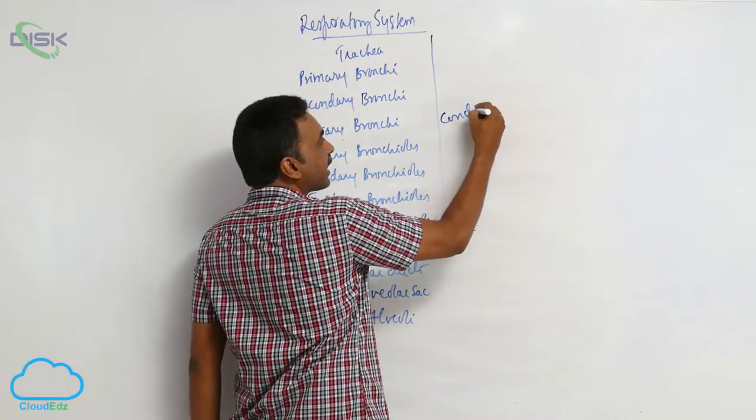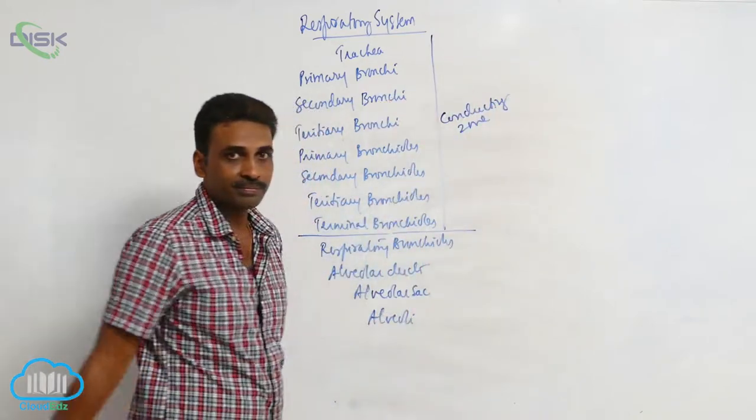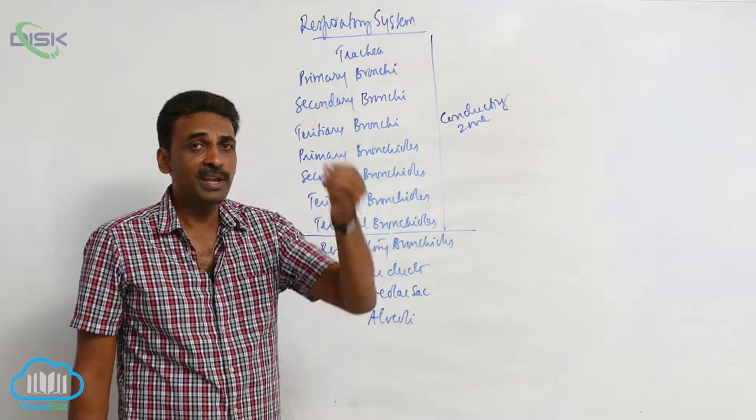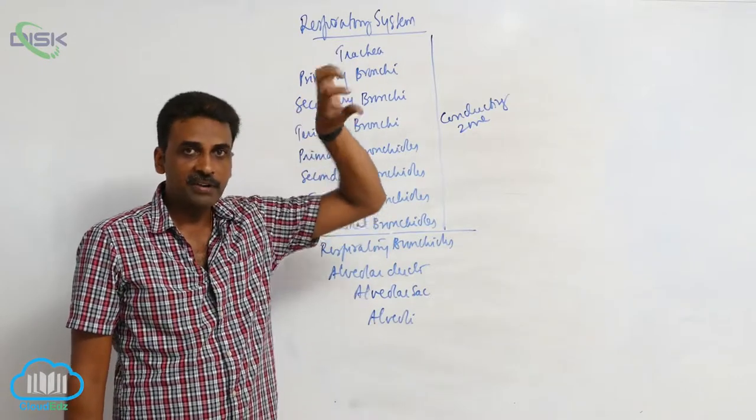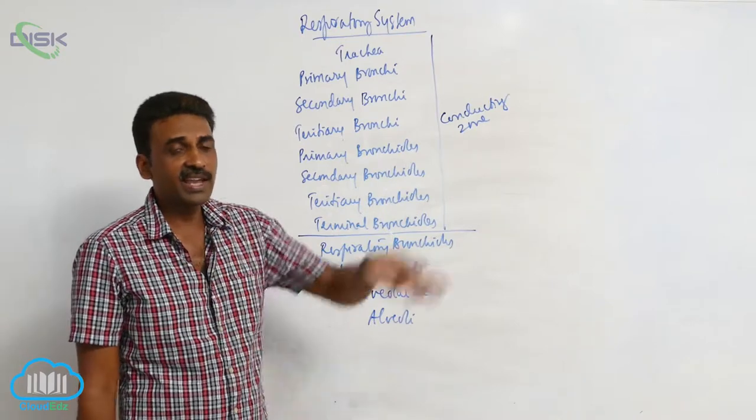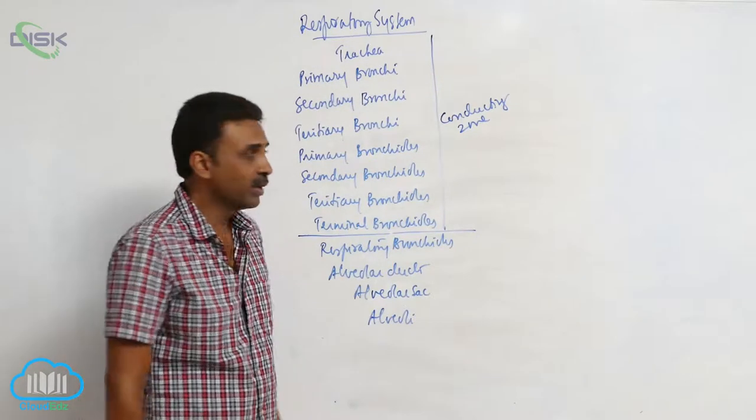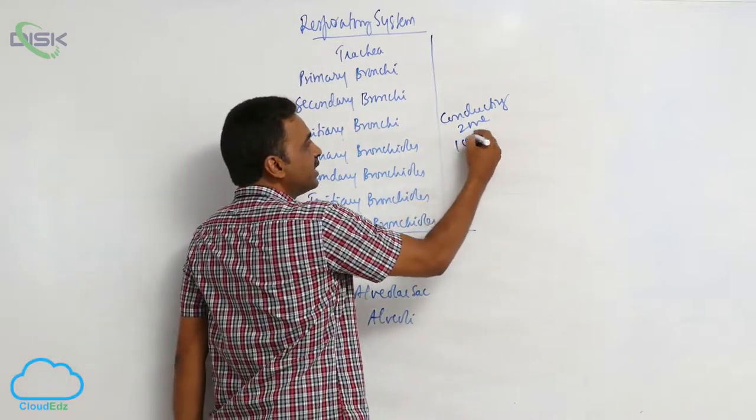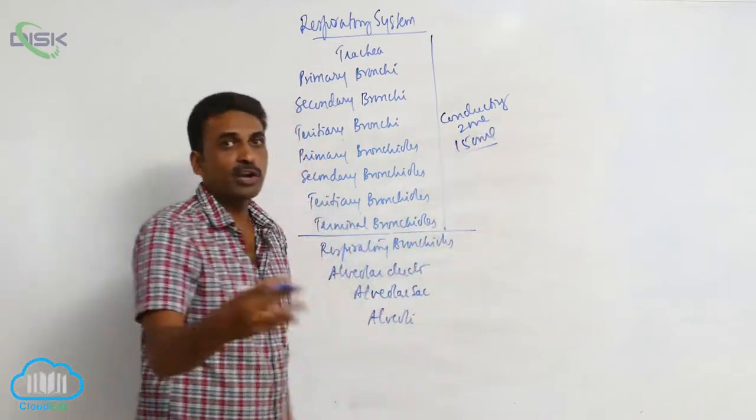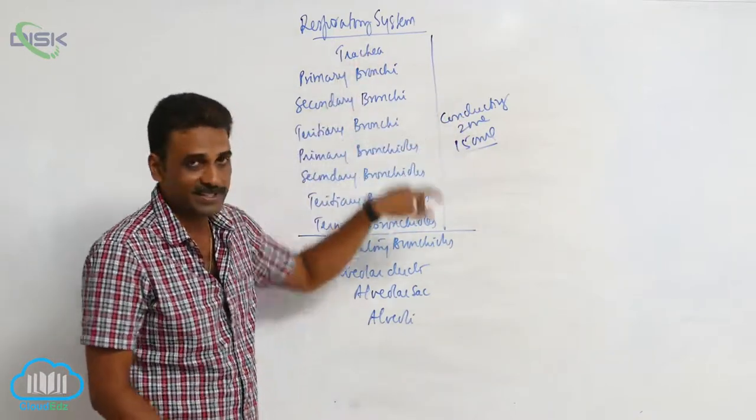This is called the conducting zone. It simply conducts the air from outside to inside, and after exchange of gases, the air is taken out through the same pathway. The conducting zone generally includes about 140 to 150 mL of air. A small quantity of air is present there.